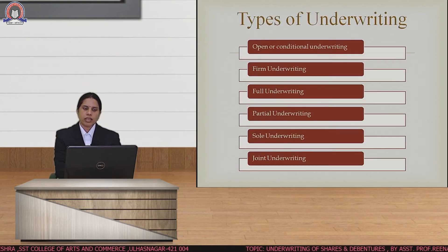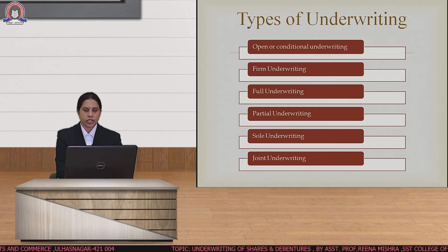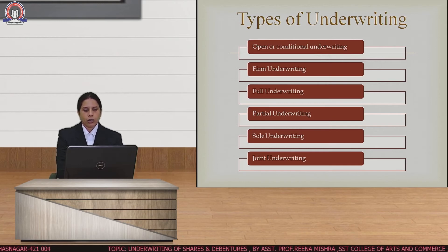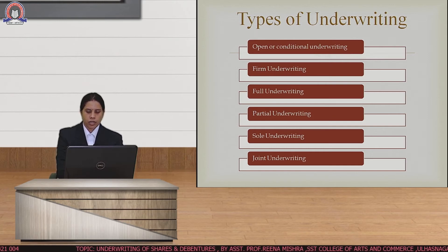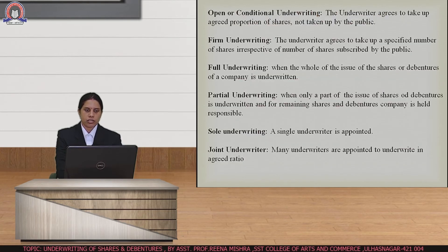There are various types of underwriting: open or conditional underwriting, firm underwriting, full underwriting, partial underwriting, sole underwriting, and joint underwriting. We will now look at the meaning of each type.